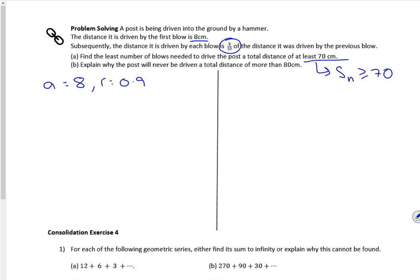So the sum to n formula, as 0.9, so I'm going to use the 1 minus formula. 0.9 to the power n, over 1 minus 0.9 is greater than or equal to 70. I'm going to have to write small. So I've got 8 times 1 minus 0.9 to the n, over 0.1 is greater than or equal to 70.